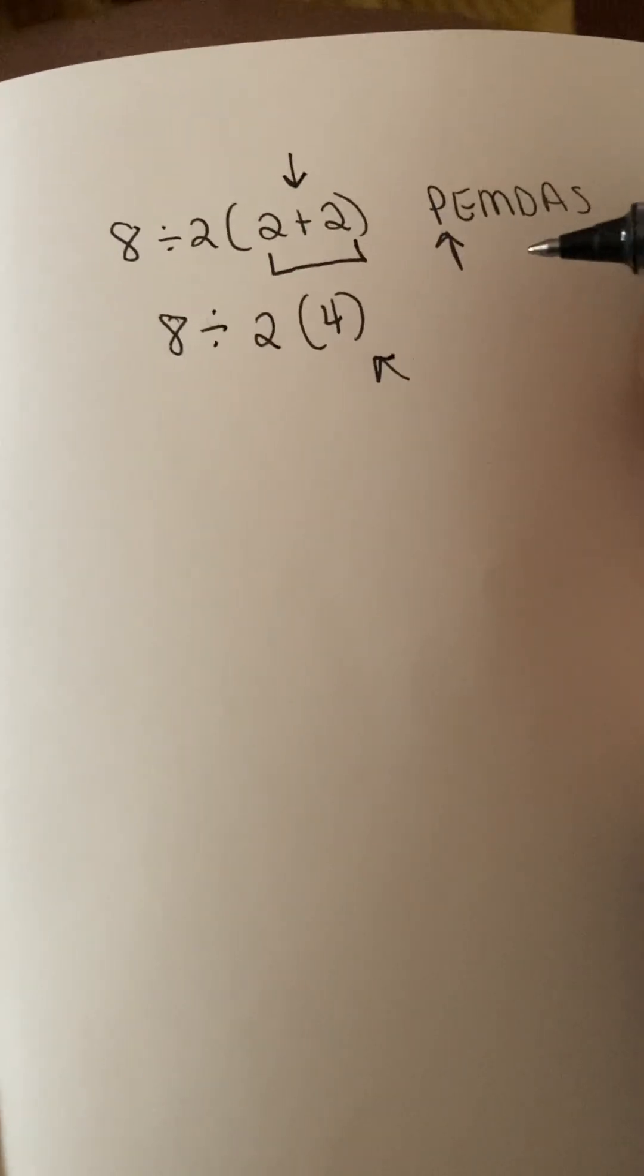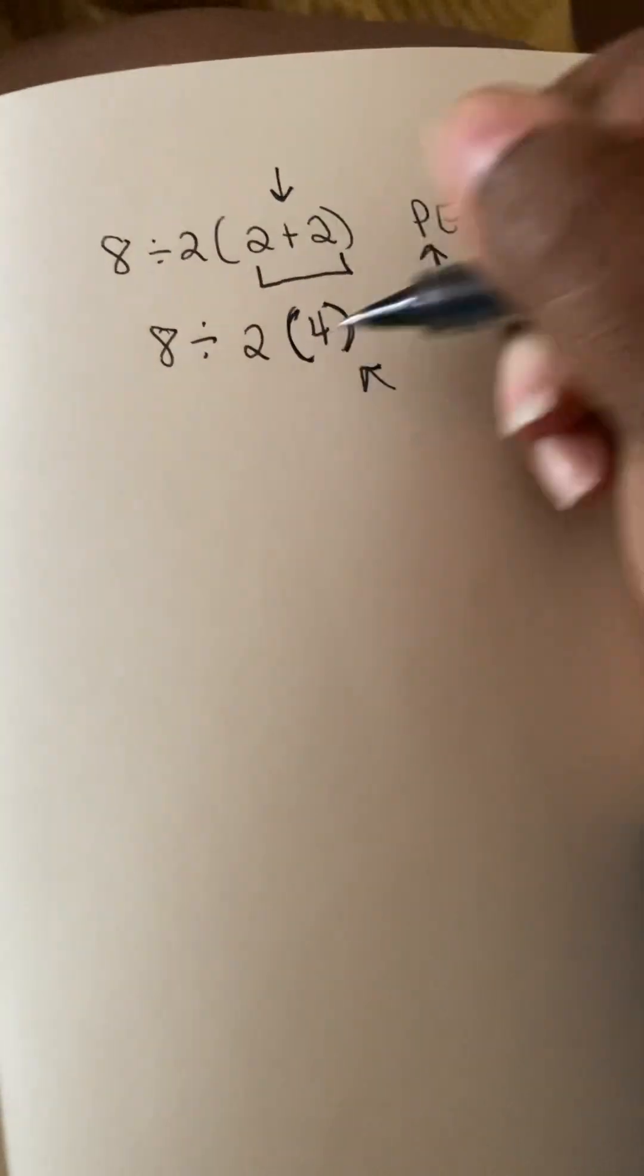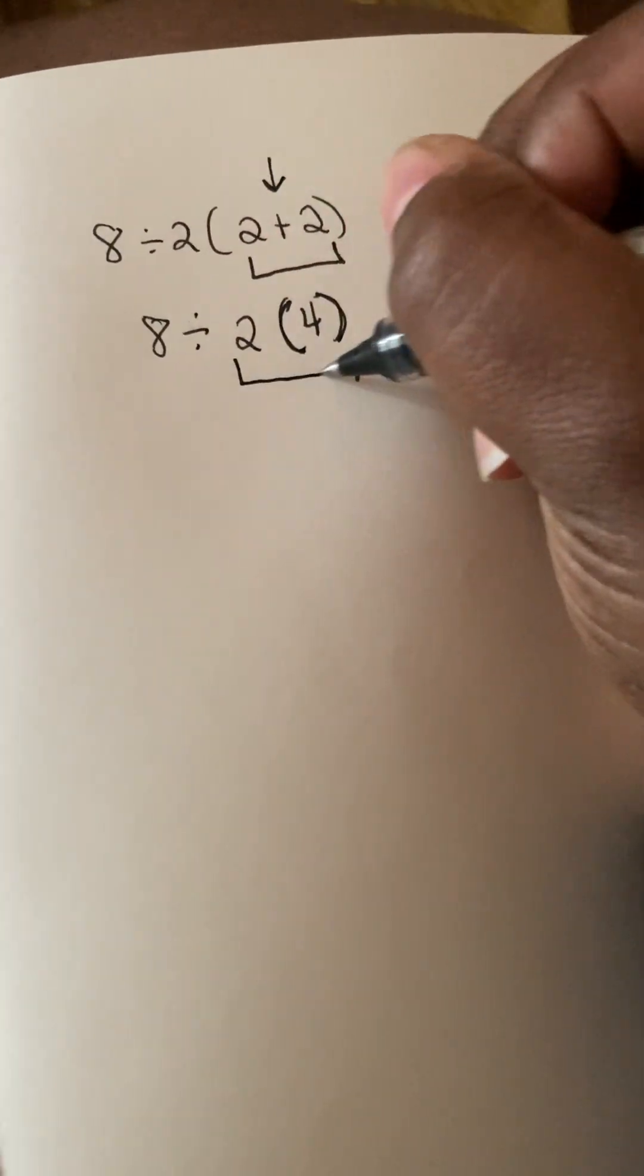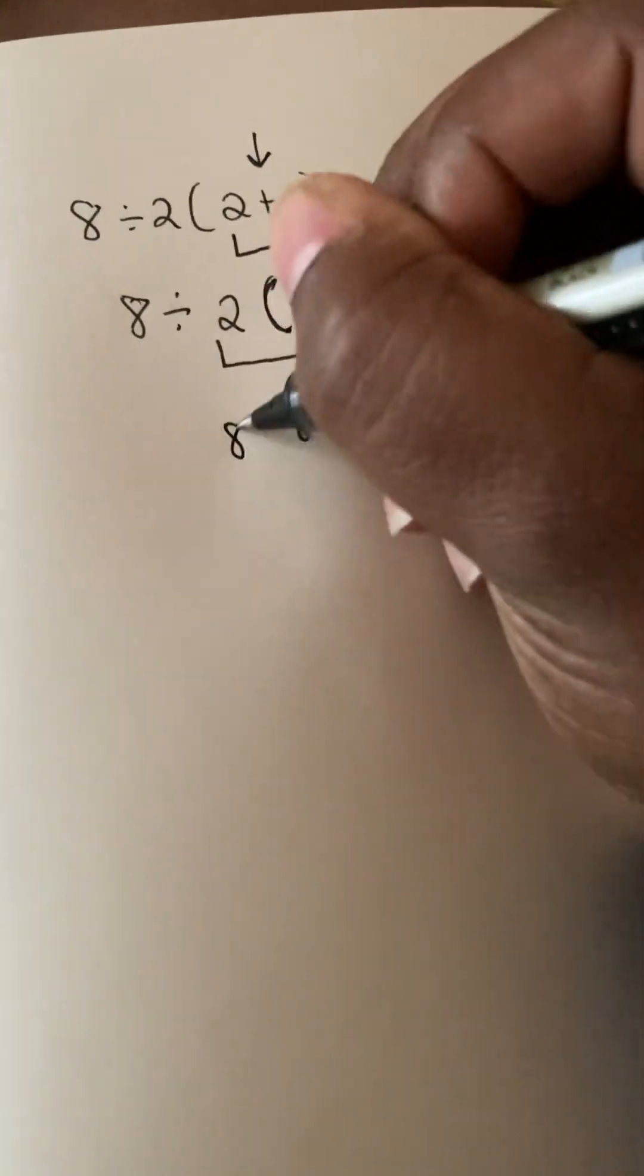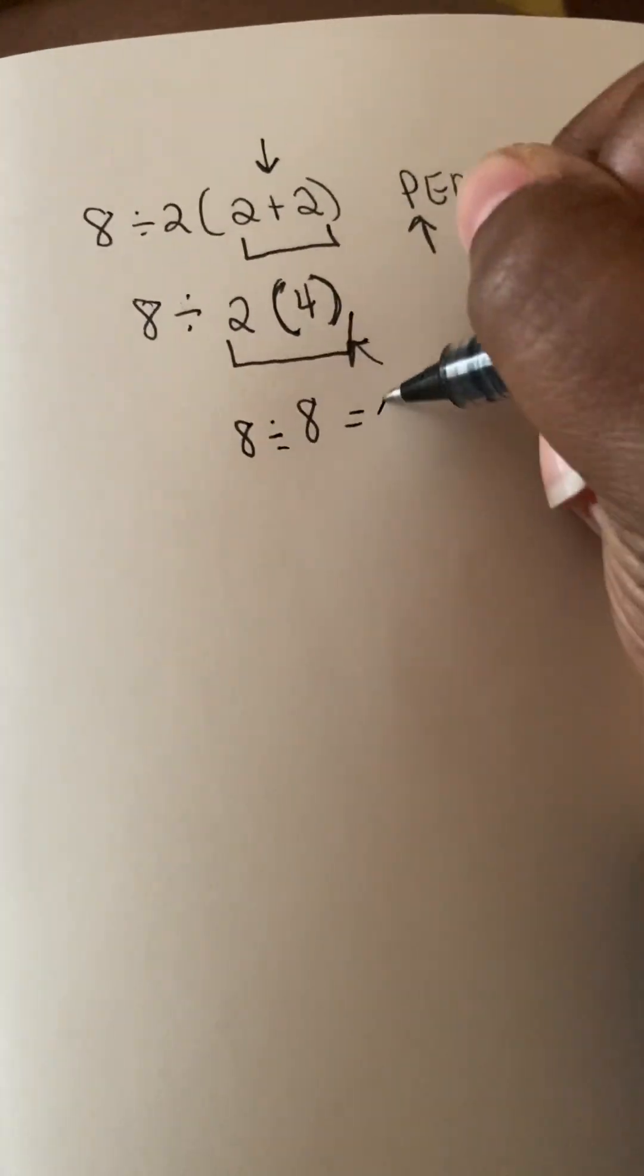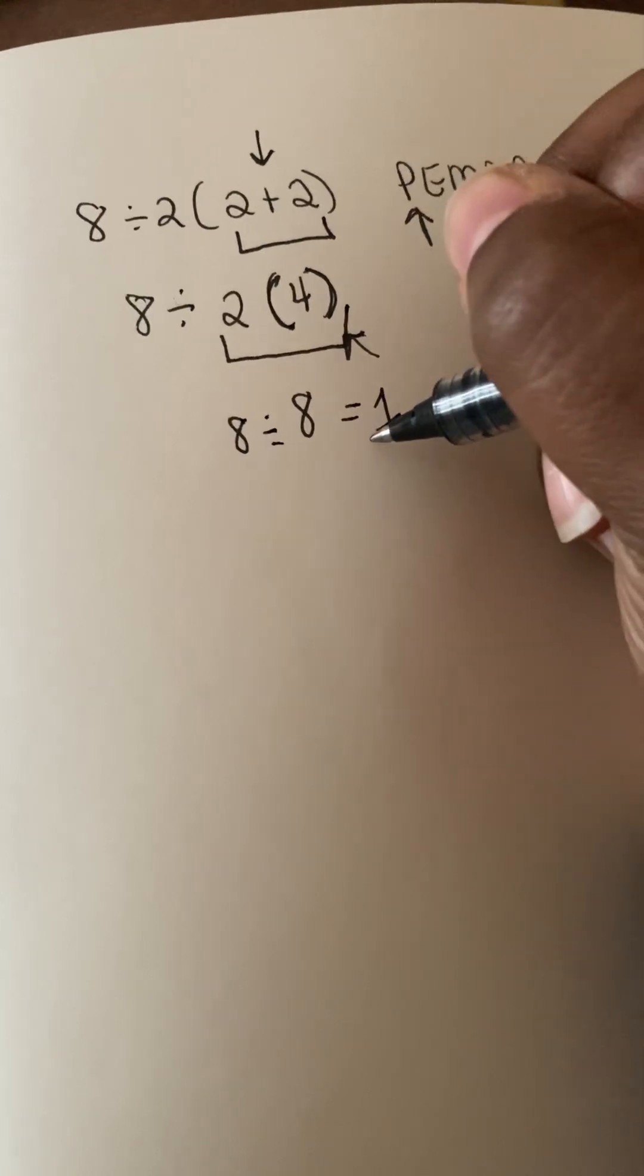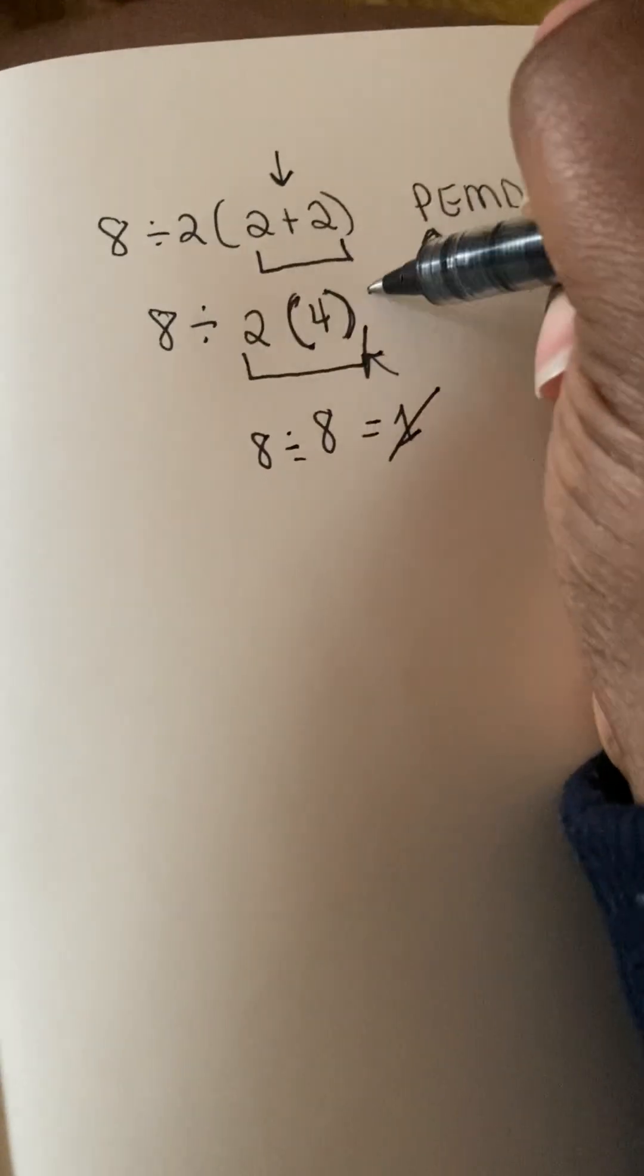So they think that they have to do 2 times 4 and they get 8, and then they do 8 divided by 8 and they get the answer as 1. But the answer is not 1.